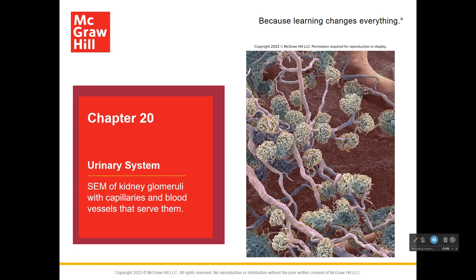This is a scanning electron microscopy micrograph of the kidney glomeruli. These are little structures where filtration occurs, and you can see capillaries all around them. There are some support cells and connective tissue around them, but they've been removed from the picture so we can see the blood vessels and capillaries serving these glomeruli.